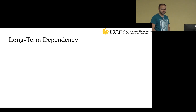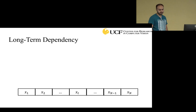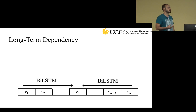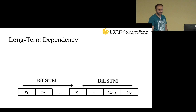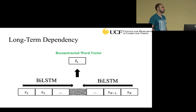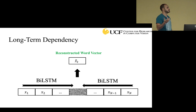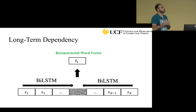For long-term dependencies, we use bidirectional LSTMs, which consist of two LSTMs. One LSTM encodes the words from the first word to the last, and the other does the same in reverse order. At each time step t, we aggregate the output of both LSTMs to reconstruct x-hat-t. We call these long-term dependencies because x-hat-t depends on all the words in the sentence from x1 to xn.